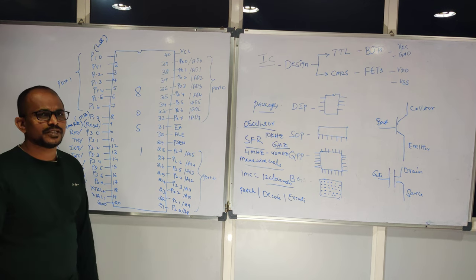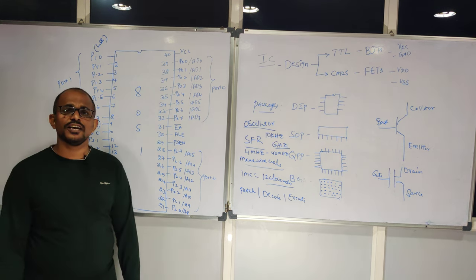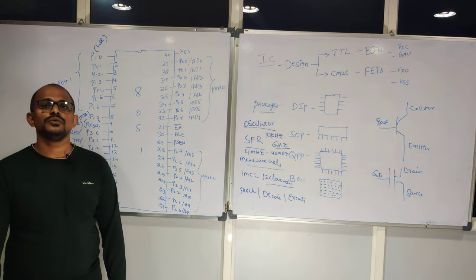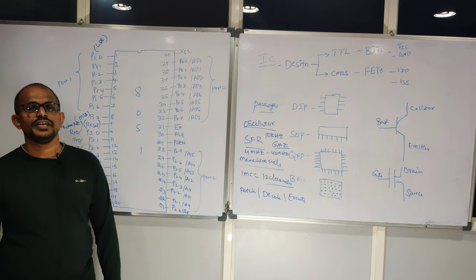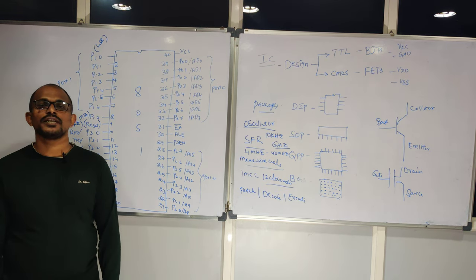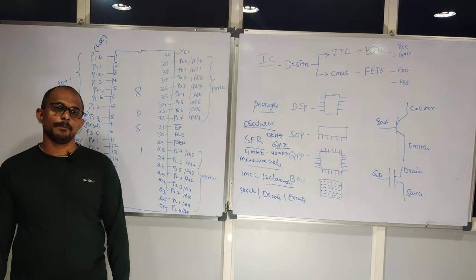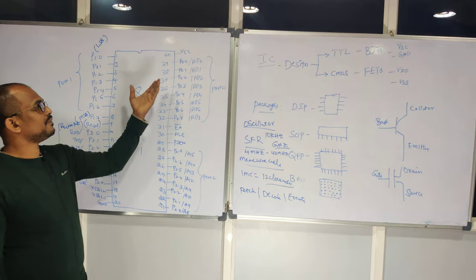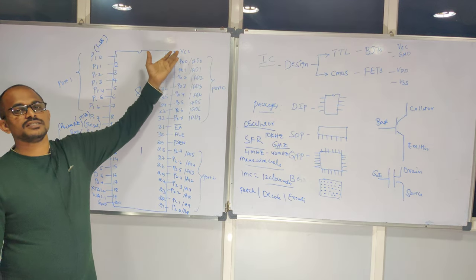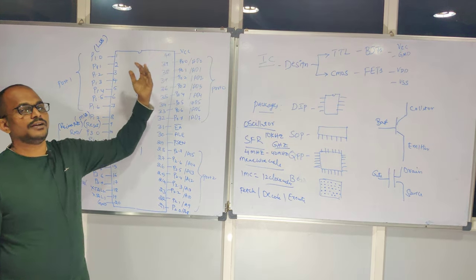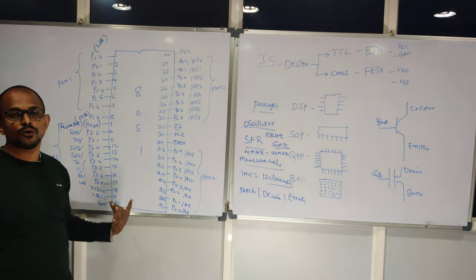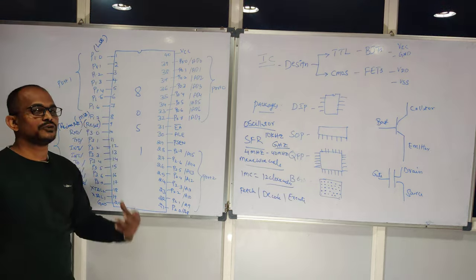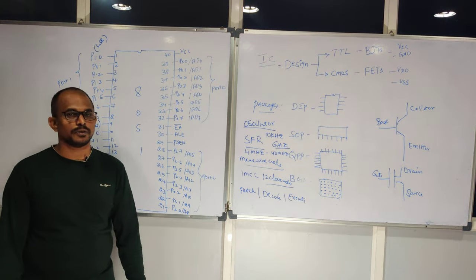The 20th pin is the device ground pin. Every integrated circuit requires power supply pins. From the 8051, the 40th pin is VCC and the 20th pin is ground. You need to provide power supply across these two pins.